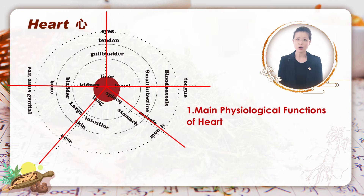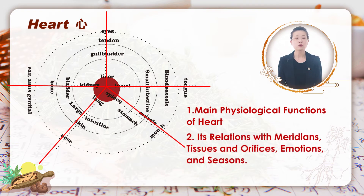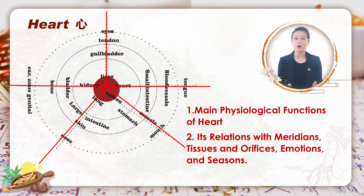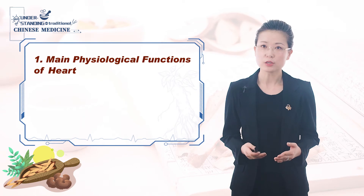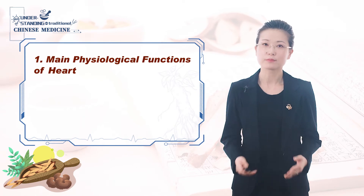We will start with the heart — the main physiological functions of heart, and its relations with meridians, tissues and orifices, emotions and seasons. Firstly, the main physiological functions of heart.